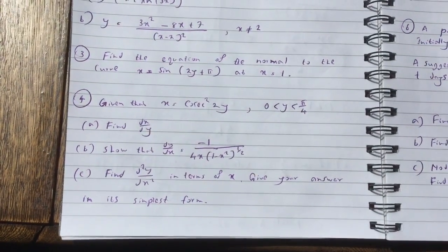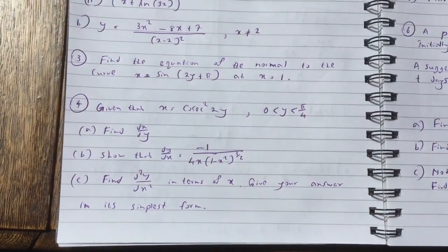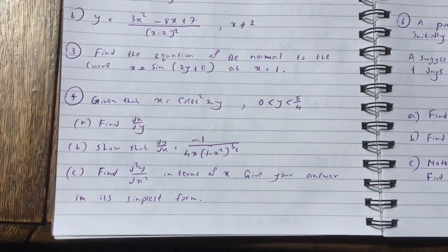Question C, find d squared y over dx squared in terms of x. Give your answer in its simplest form.